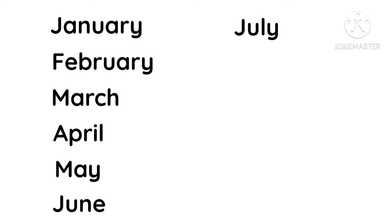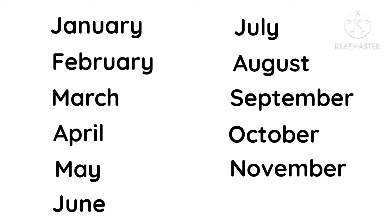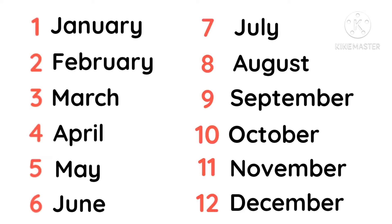July, August, September, October, November, December. These are the months of the year. How many months are there in a year? There are 12 months in a year.